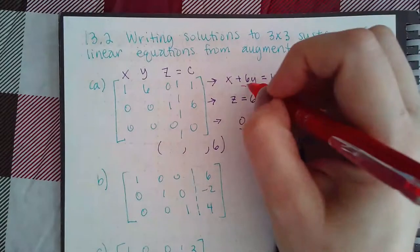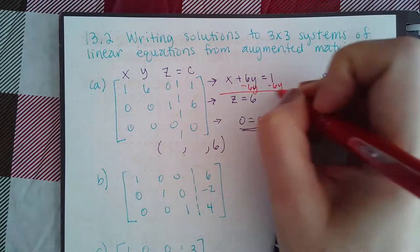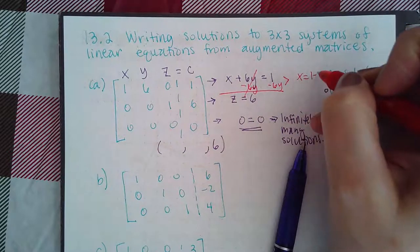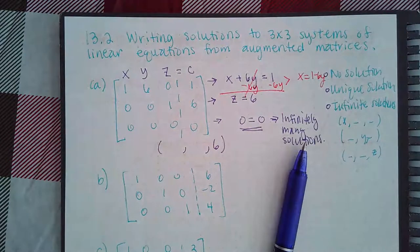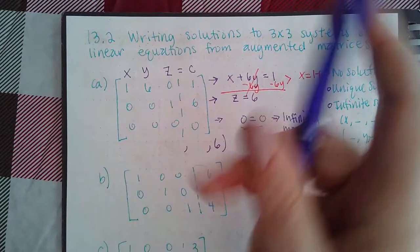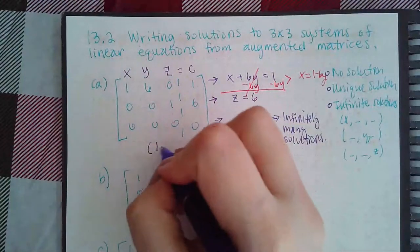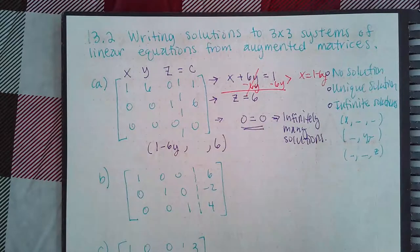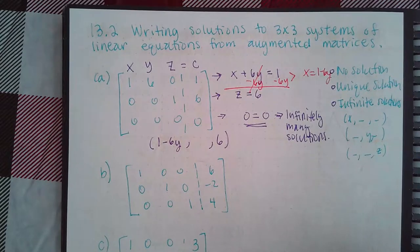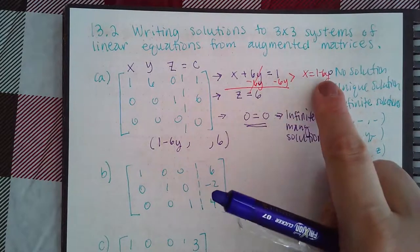So what I'm going to do is I'm going to minus 6y both sides of this equation, and I end up with the equation x equals 1 minus 6y. So now I have an expression for x. My expression for x is going to be 1 minus 6y.